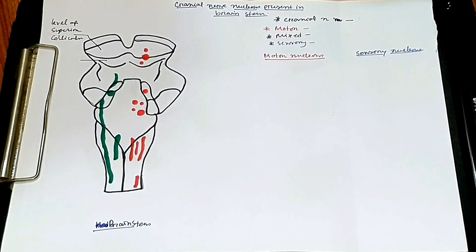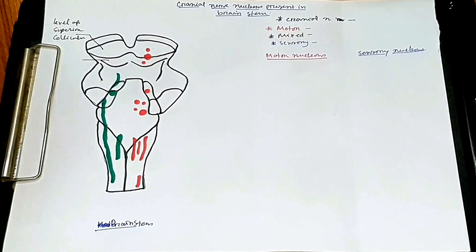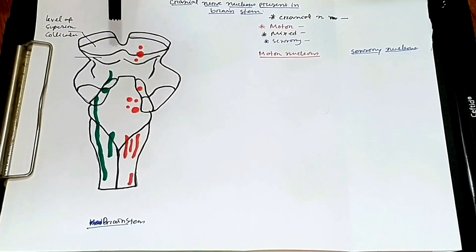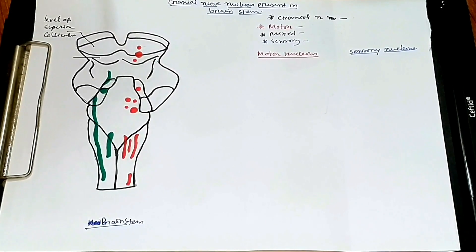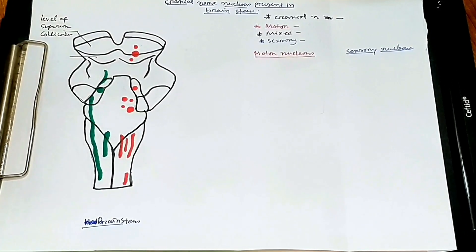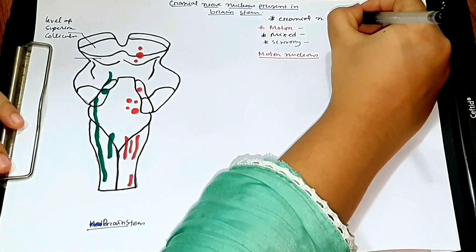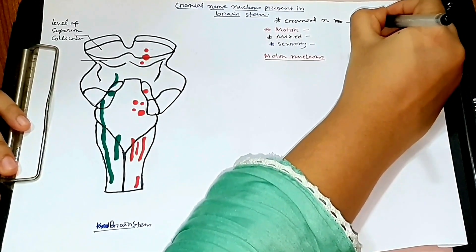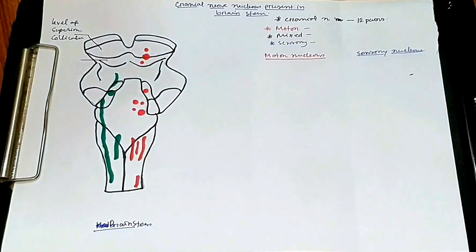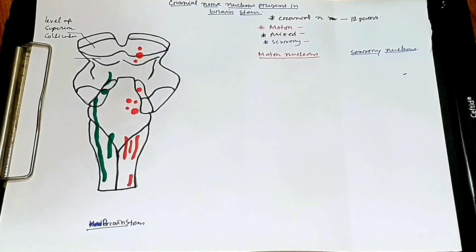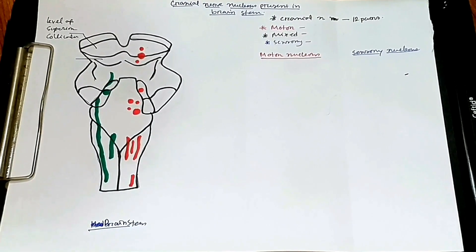Today I am going to discuss cranial nerve nuclei present in the brainstem. I have drawn a diagram of the brainstem here. First of all we have to know about the cranial nerves. We know that there are 12 pairs of cranial nerves. There are some motor nerves, some mixed, and some are sensory.